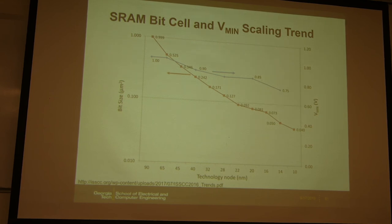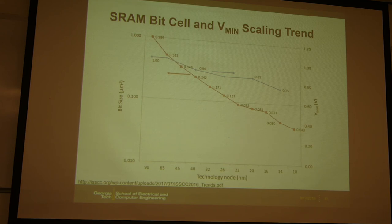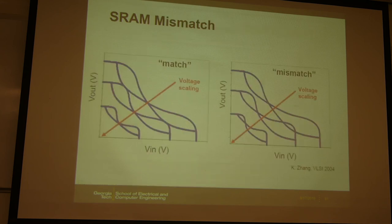This is the scaling trend for the power supply VDD. As we scale the technology node, it's possible to scale down VDD for low-power applications. At 90 nm the minimum VDD is about 1 volt, and today at 14 nm or below, the minimum VDD can be scaled to about 0.7 volts. You can also operate at higher VDD for faster operations, but this is the minimum achievable given the noise margin.